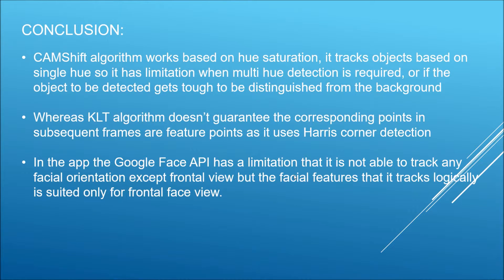In conclusion: the CamShift algorithm works on a base of hue saturation — in simple terms, color. It tracks objects based on a single hue, so it has a limitation when multi-hue detection is required or when the object is not distinguishable from the background. The KLT algorithm doesn't guarantee corresponding points in subsequent frames as the same feature points, as it uses Harris corner detection.